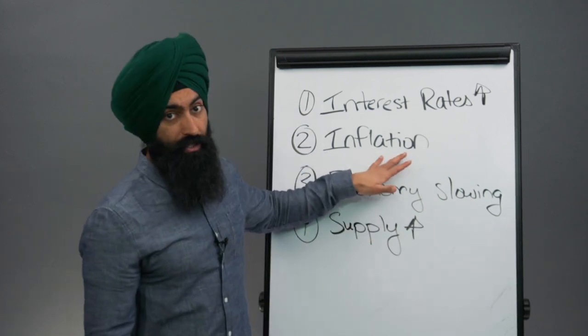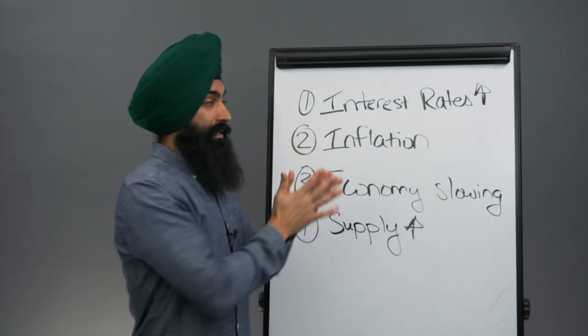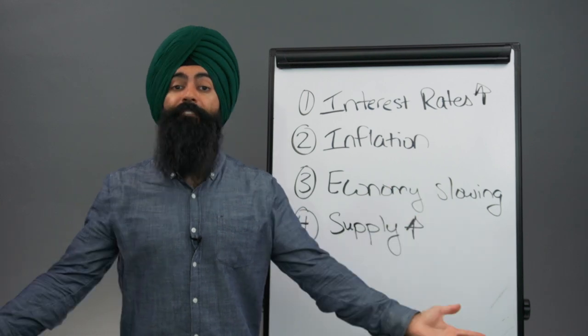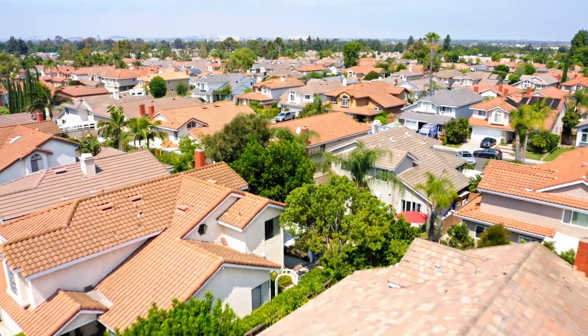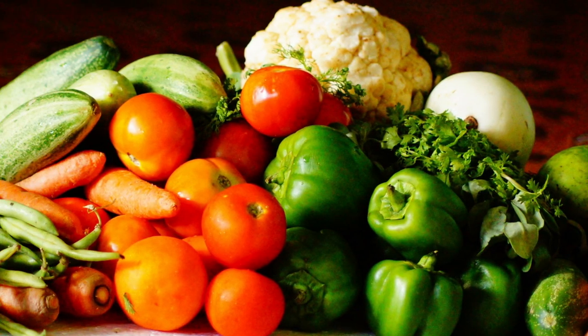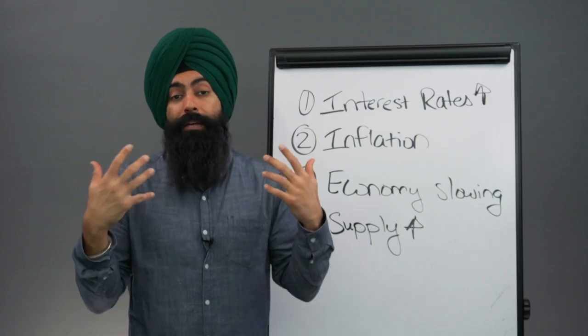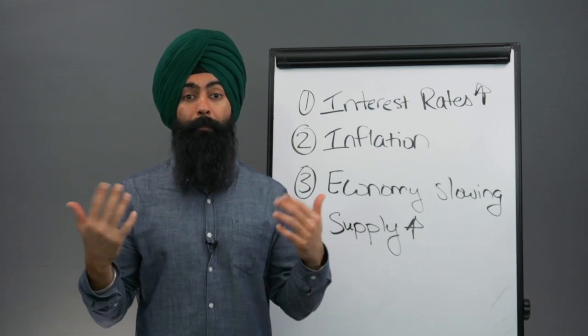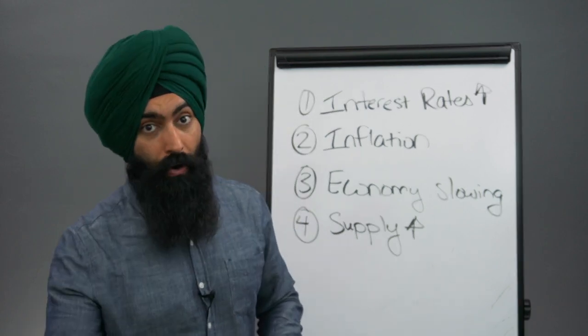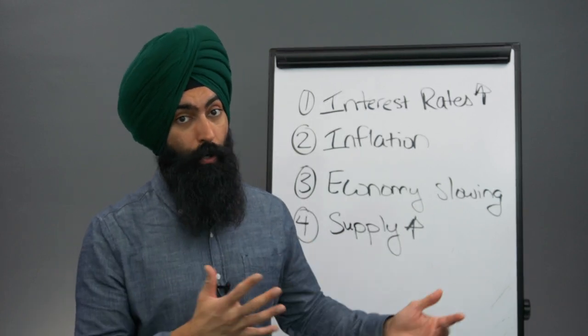Second, we have the inflationary pressures. The issue with this is essentially now the prices of everything has gone up. That means your rent and housing costs are more expensive. Your groceries are more expensive. Everything is more expensive, which means people have less cash in their bank accounts, which means people don't have the same ability to go out and buy a car the way that they did a couple of years ago.